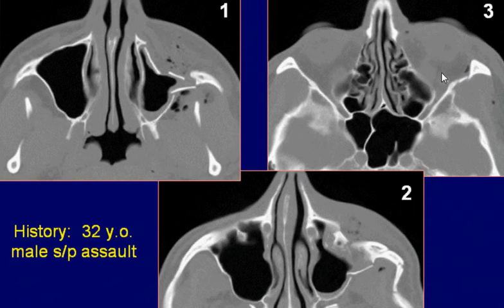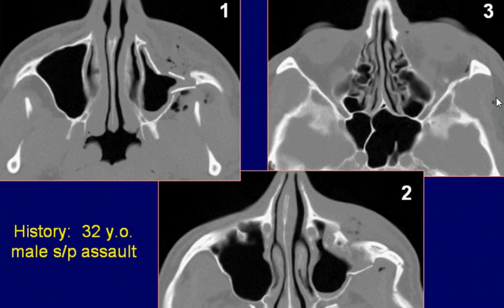A small bony fragment is seen inside the left orbit. There are small air pockets seen within the left orbit and adjacent soft tissues of the face.